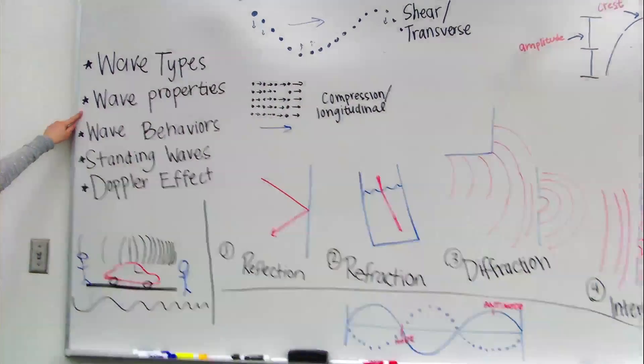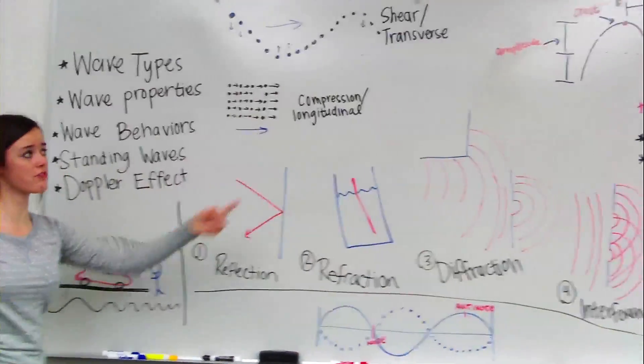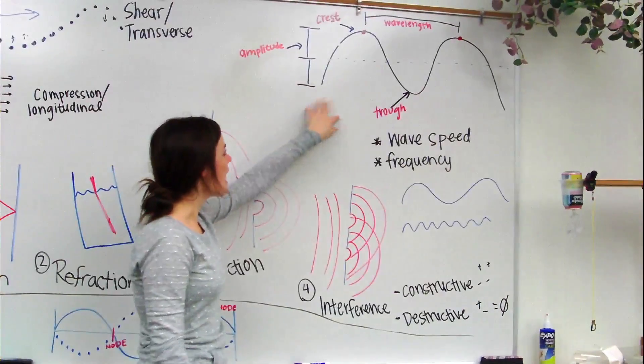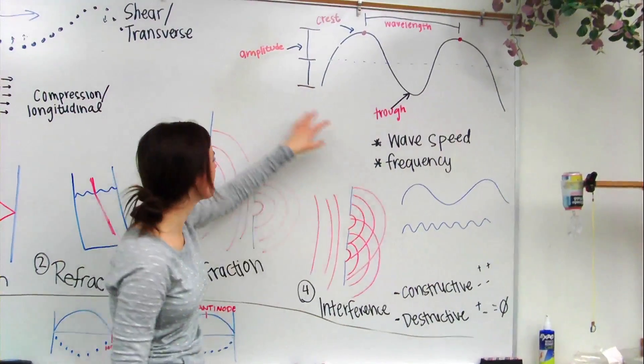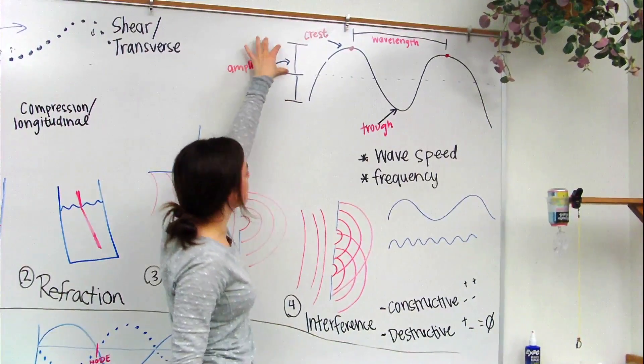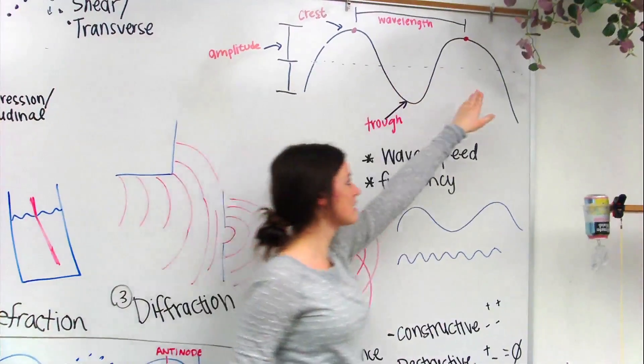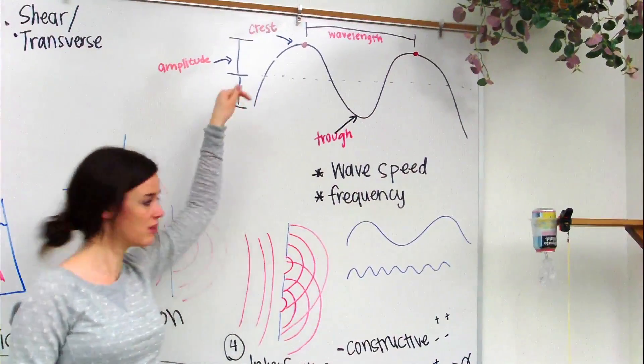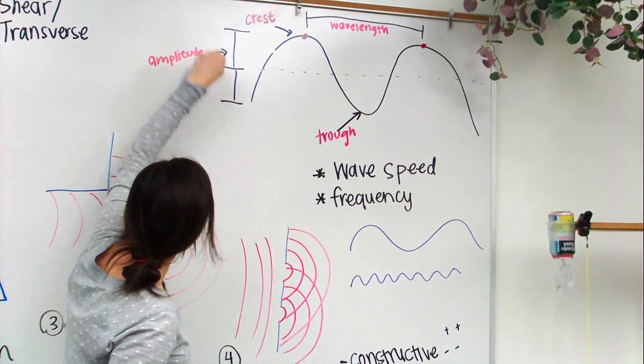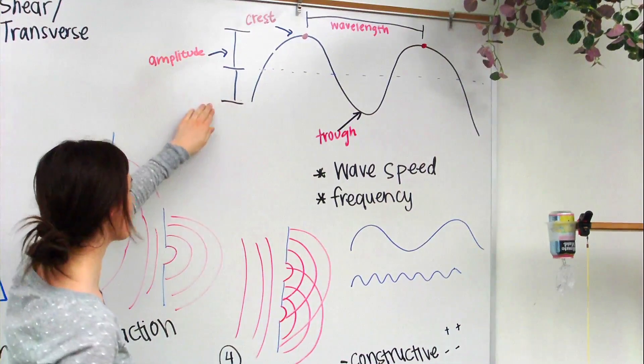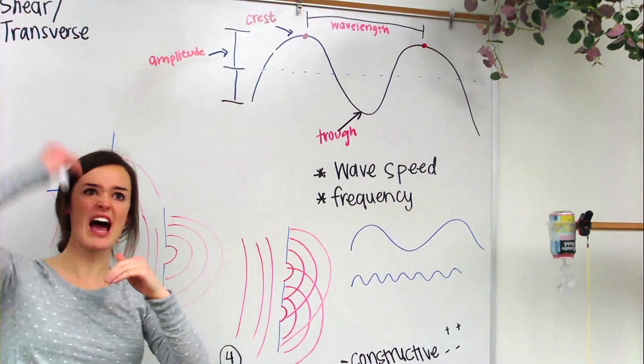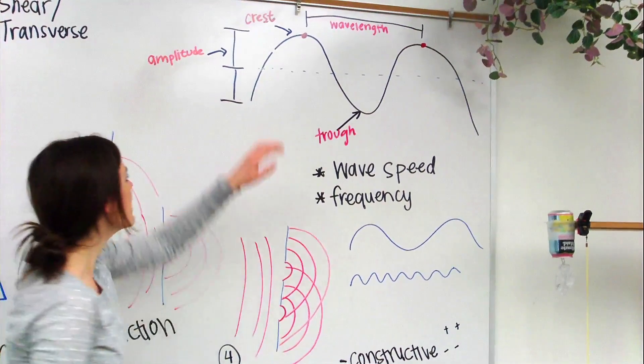So the next thing we're going to do is wave property. So we'll just move over to the right side of the board. And this is the anatomy of a wave. So we'll start off with the amplitude. We see we have this median line here that cuts across the middle of the wave. From this point to the top, or from this point to the bottom, that's the amplitude. So just how high up or how low it travels.